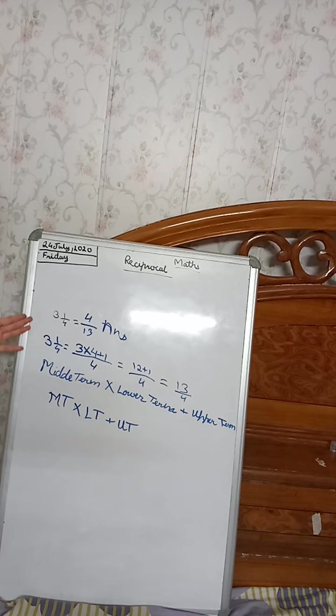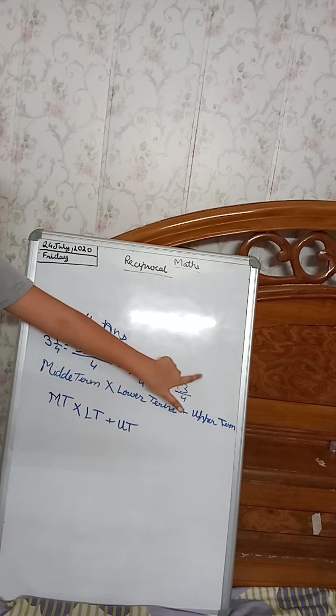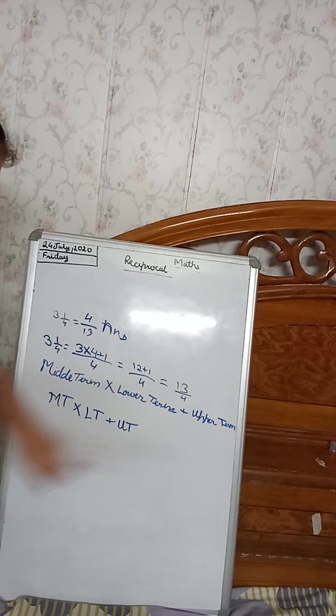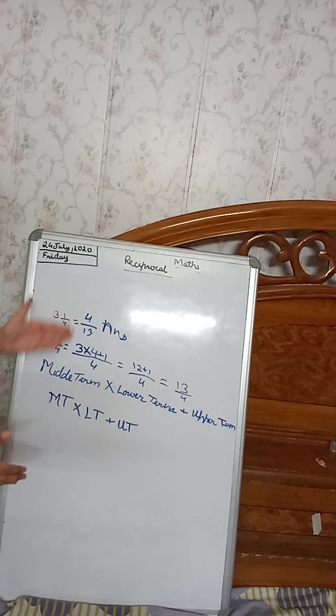You can see here, in the last video, I told you how to convert a mixed fraction into a reciprocal. We took out an improper fraction, we just switched it, and our answer was 4 by 13.